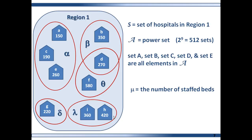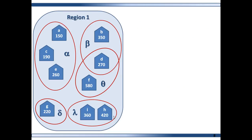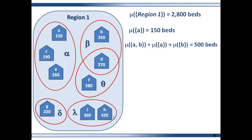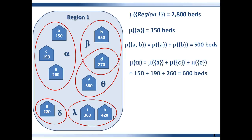In these cases, the measure is a function that assigns the number of staffed beds to every set in the power set. If you add up all the beds in the region, the measure on that set, Region 1, is 2800. The unit sets are in the power set, so the measure on the set Hospital A is 150. The measure on the set containing Hospital A and Hospital B equals the measure on Hospital A plus the measure on Hospital B, which is 500. The measure on set Alpha, which includes hospitals A, C, and E, equals 600.